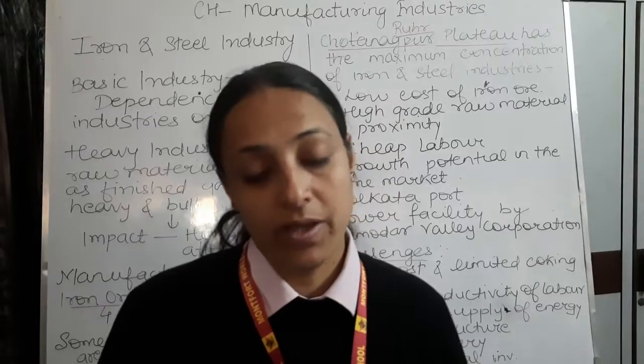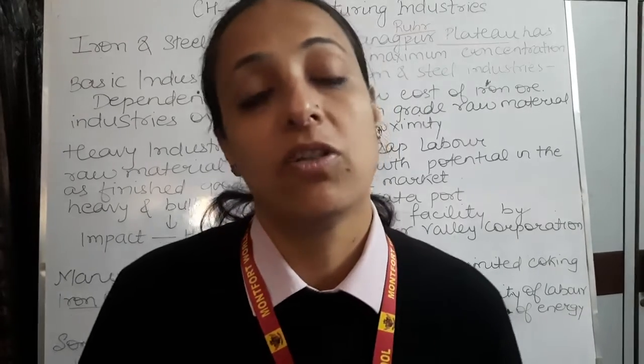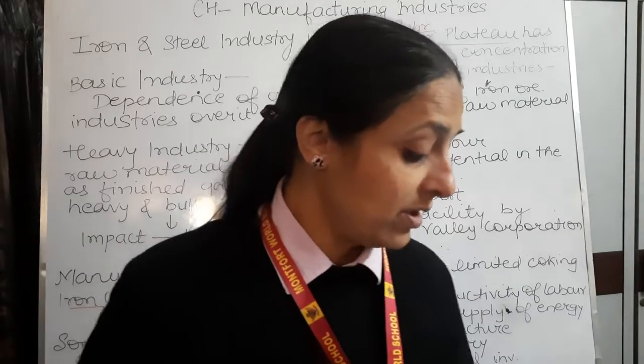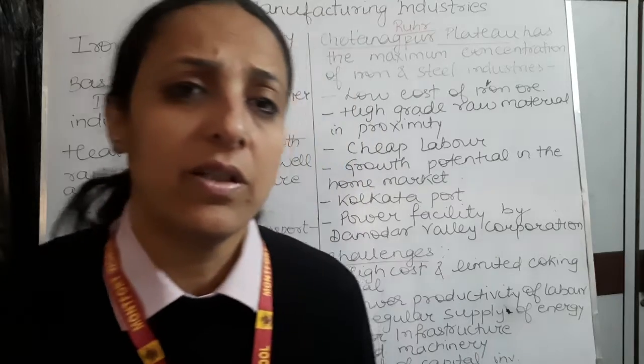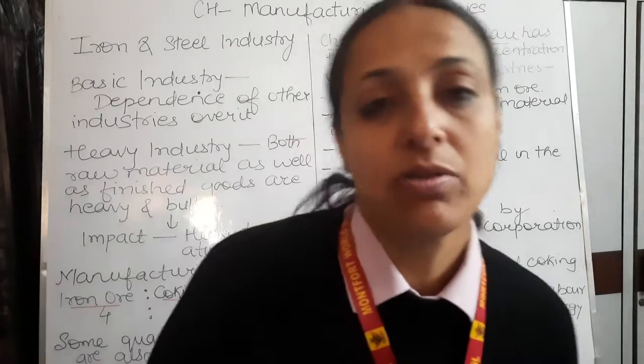The Kalinganagar controversy occurred in January 2006, where 12 tribal people were killed by police firing. They were protesting outside Tata Steel against not being paid due compensation for their land. This controversy in Kalinganagar, Odisha drew heavy criticism and affected industrialisation in the region.